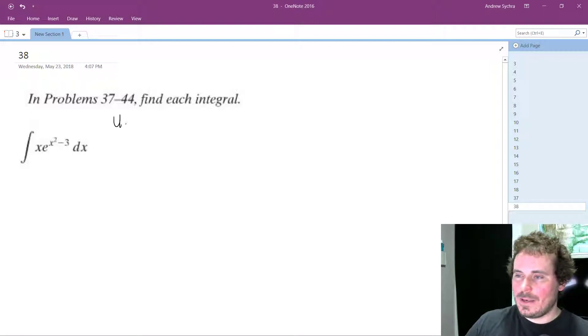So I'm going to set u equal to x squared minus 3, and du is going to be equal to the derivative of that, which is going to be equal to 2x.